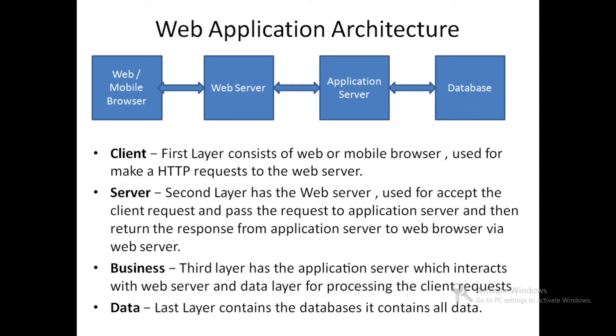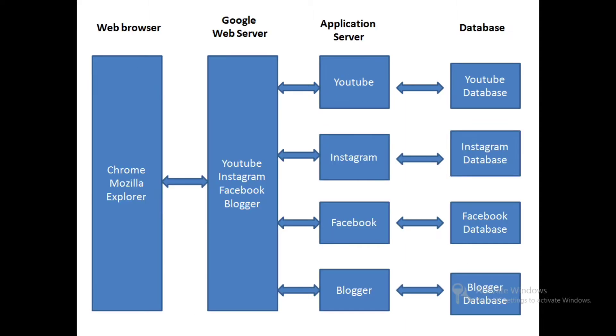If you understand the details, you will see the diagram. This is the web browser — Chrome, Mozilla, Explorer. Let's look at the Google web server. For the Google web server, there are millions of websites.